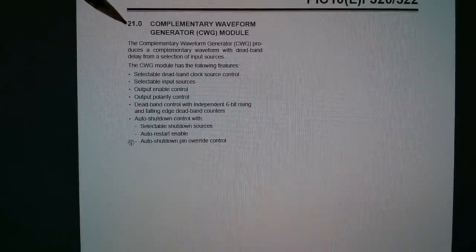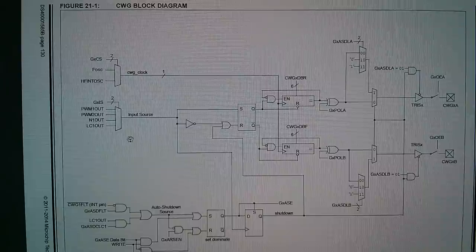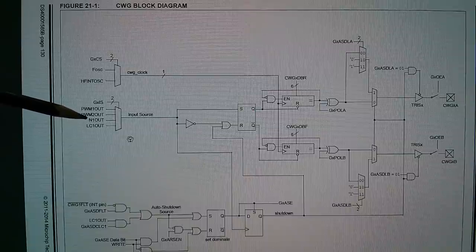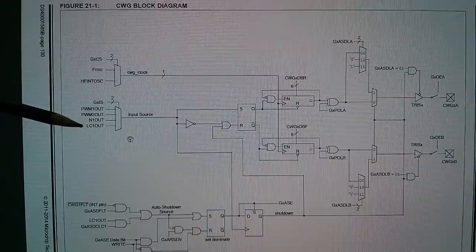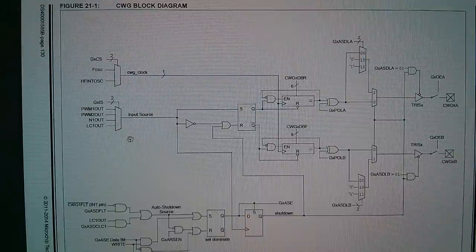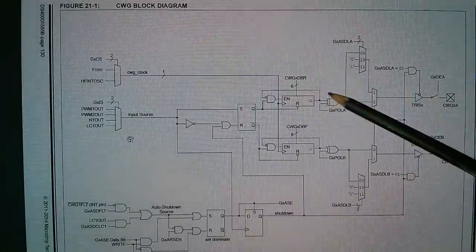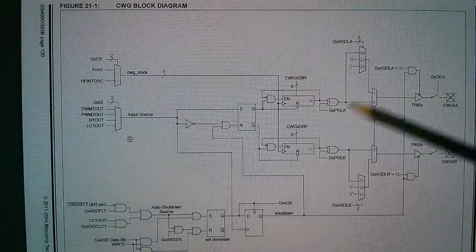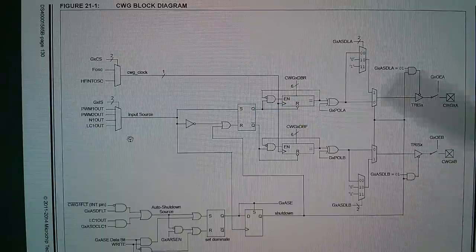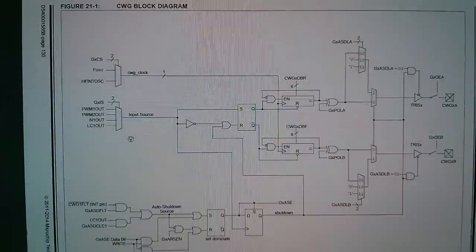Now, there is another peripheral called the complementary waveform generator. I've not really studied this one, but it does look from the block diagram like you need an oscillator source. You also need an input source. It looks like you can take either the NCO as an input or the logic cell as an input. So since the NCO is already going into the logic cell, we could take the output of the logic cell and pass that into the complementary waveform generator, if we felt so inclined. And that would then produce complementary outputs and feed those actually to RA0 and RA1. So that would drive the two LEDs in opposition to each other. But I'm not going to get into this now. It does look very complicated, and I've not played with that one yet.